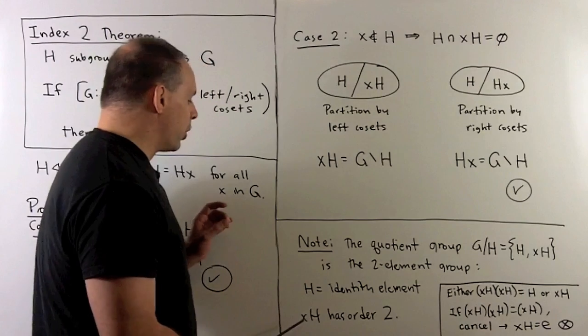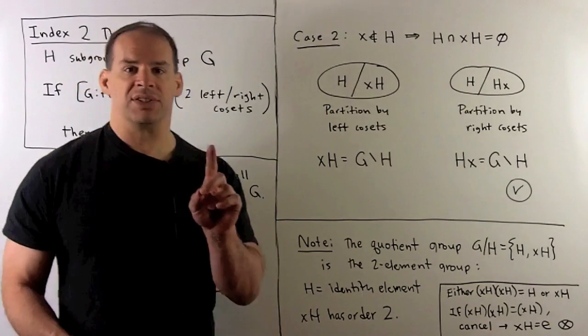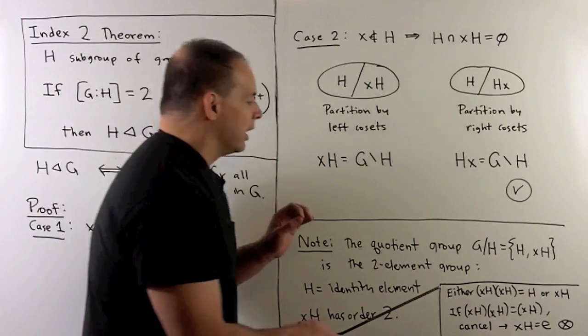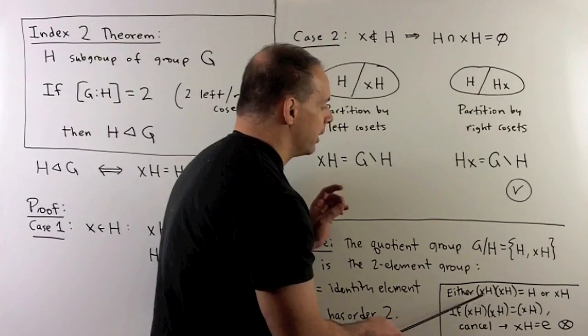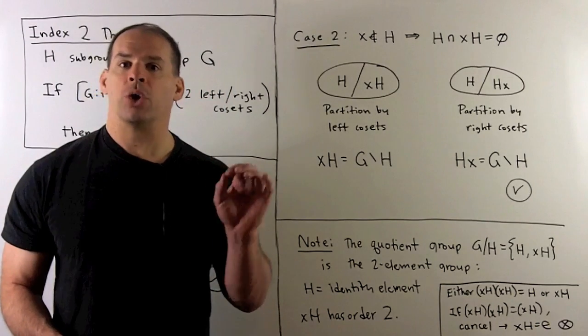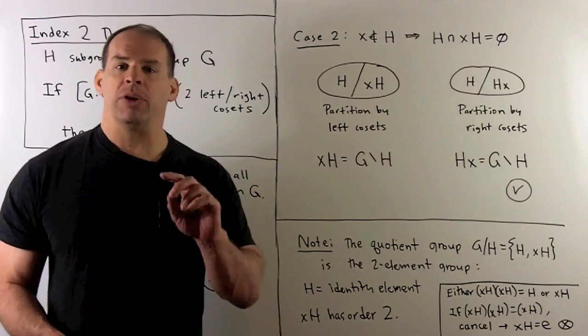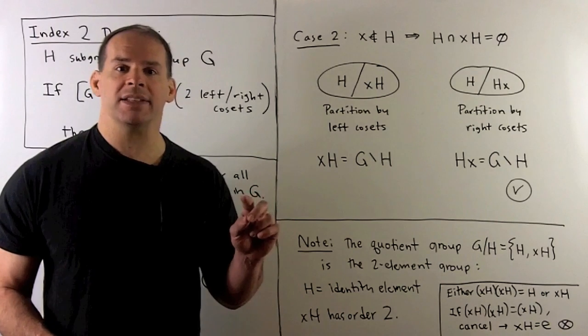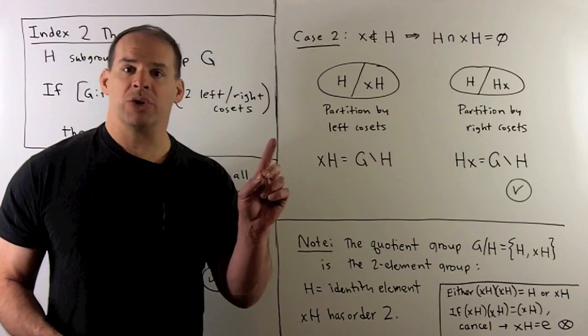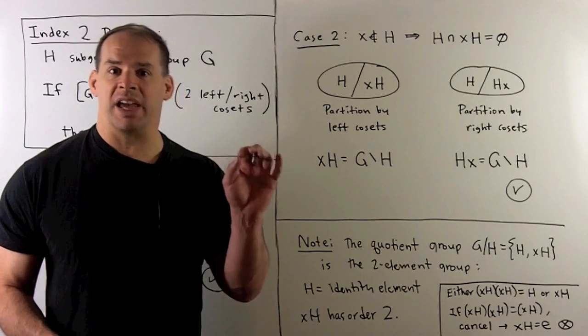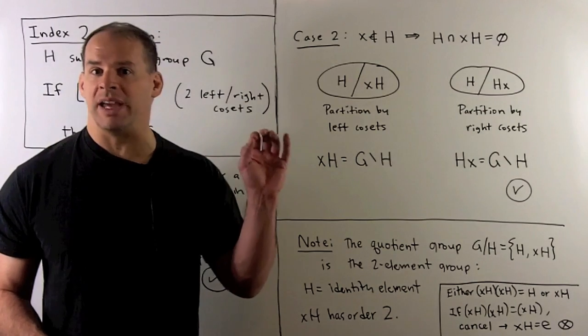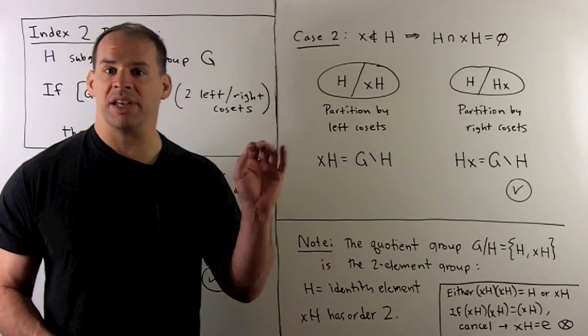This says if we multiply XH by itself, we get the identity element. If we have a two-element group and multiply XH by XH, we have two possibilities: either H or XH. If we get back XH, we cancel on both sides to get XH equals H, the identity element. That's a contradiction because we're insisting XH not be the identity element. So XH squared equals the identity, or XH has order two.